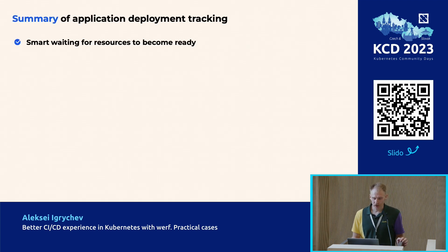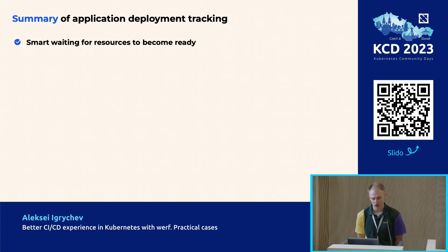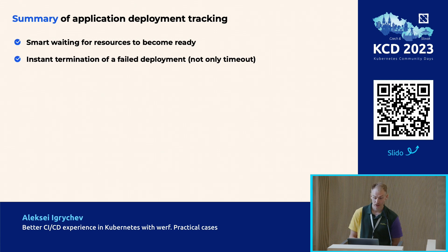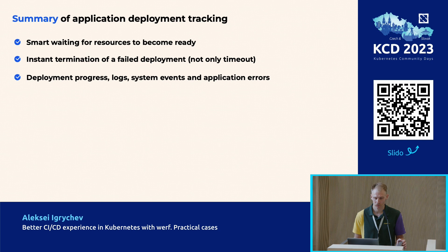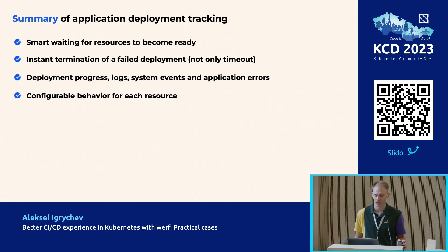Summary of application deployment tracking. What has Werf done in this context? Smart waiting for resources to become ready — Werf has generic tracking for all resources based on information available in the cluster. Instant termination of failed deployment, not only timeout — Werf does fail-fast based on events in the cluster. Deployment progress, log system events, and application errors — Werf gives enough information for troubleshooting and observability. And finally, configurable behavior for each resource — all of the above can be configured per resource.